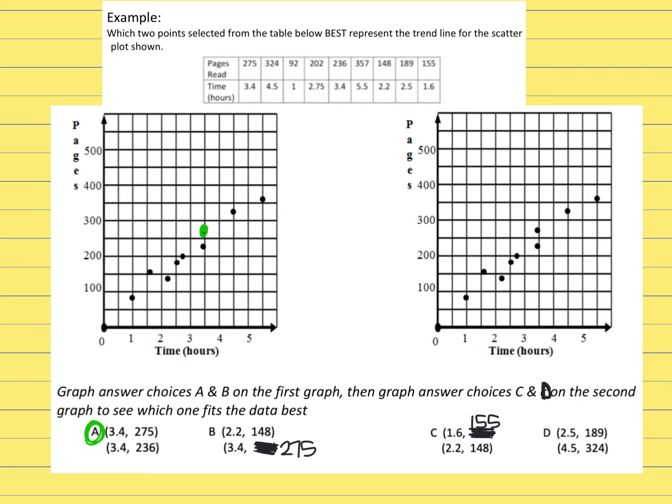Then the second point on answer choice A says stay on 3.4, but now use 2.36. So that would just be below it.